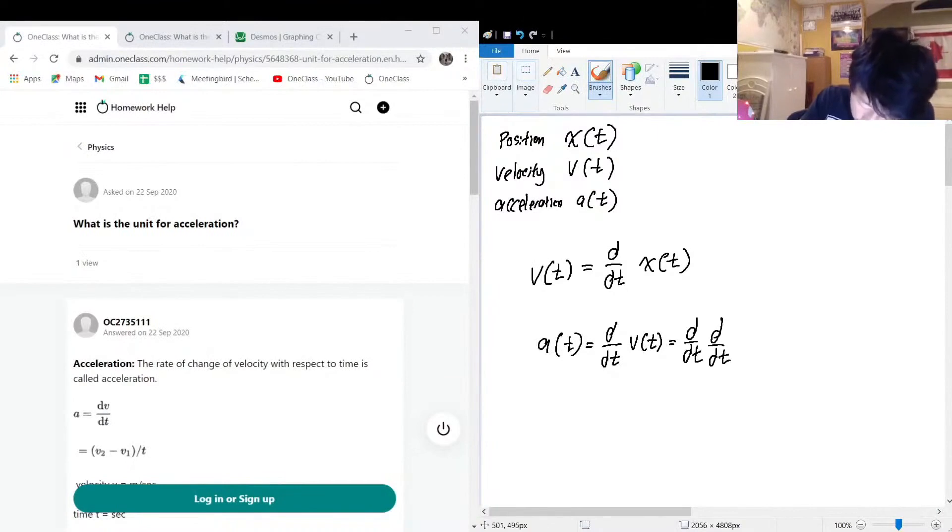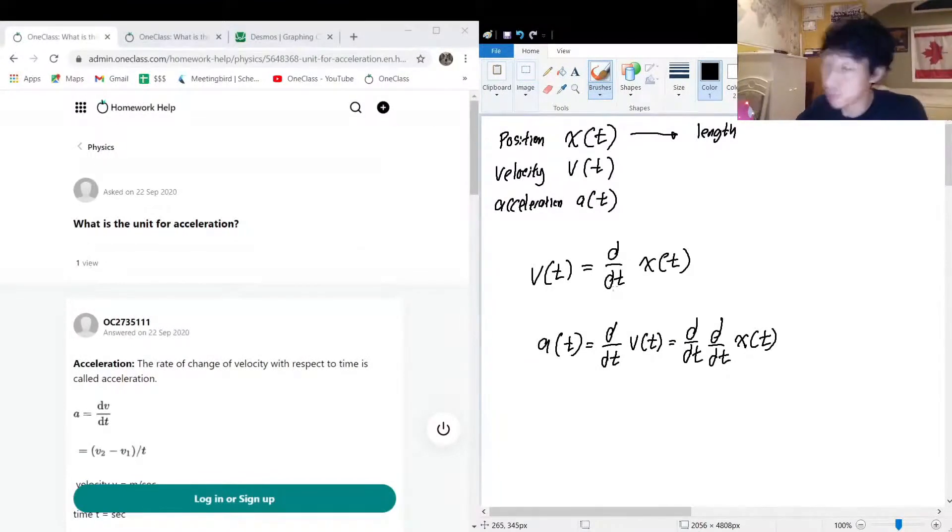Okay, so the units for x(t) is just going to be a length. When we differentiate length with respect to time, differentiating means that the unit is going to be divided by what we're differentiating with respect to, in this case time. So this is going to be a length over time.